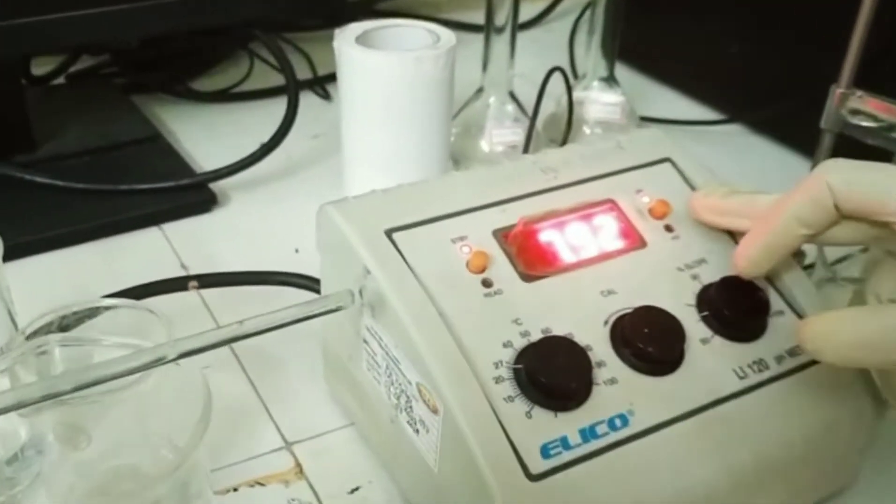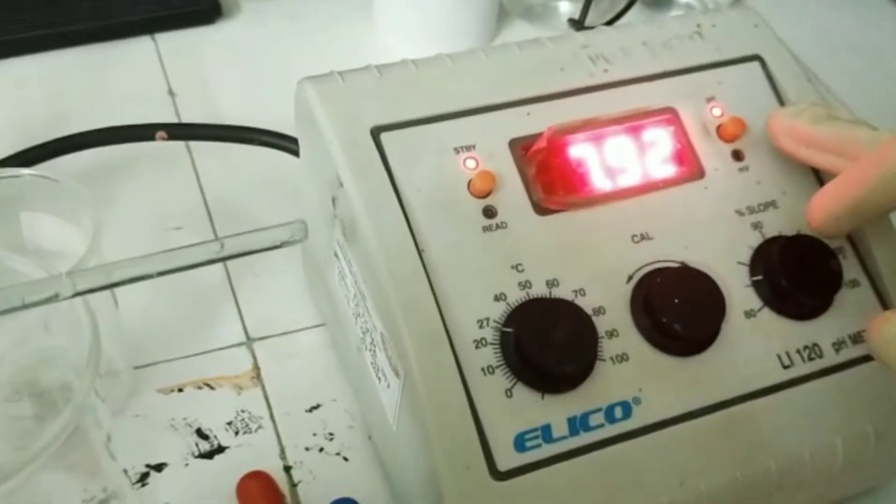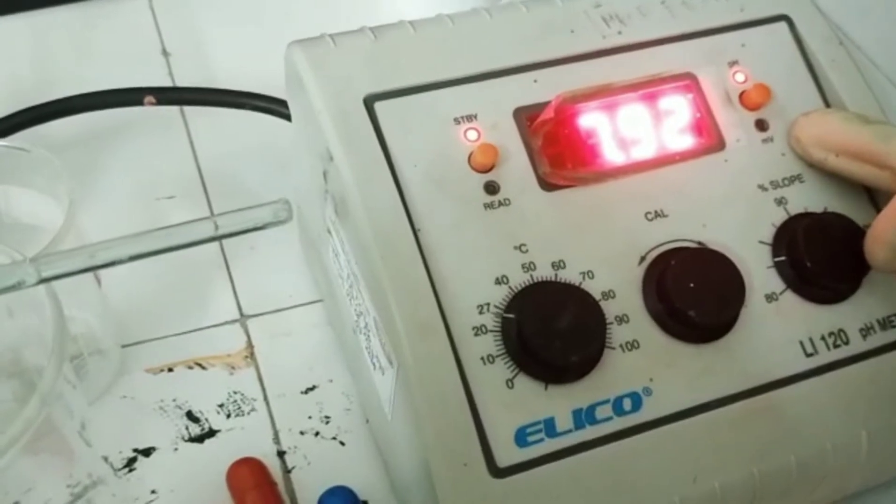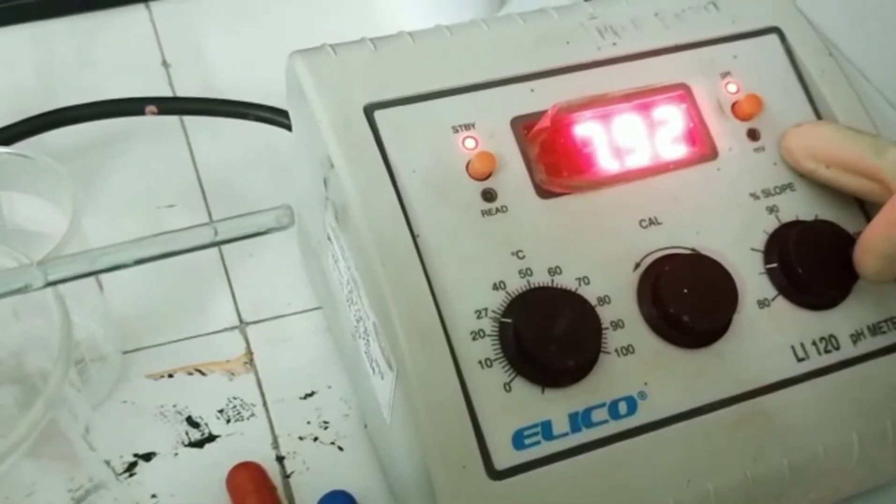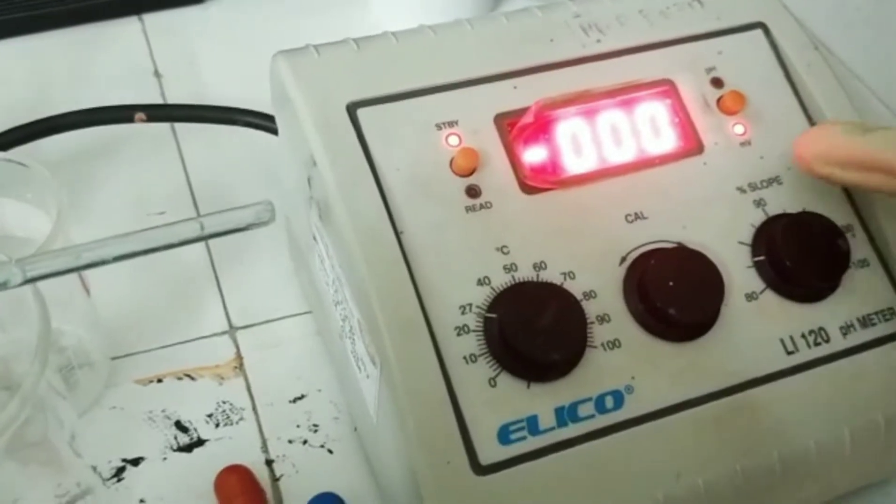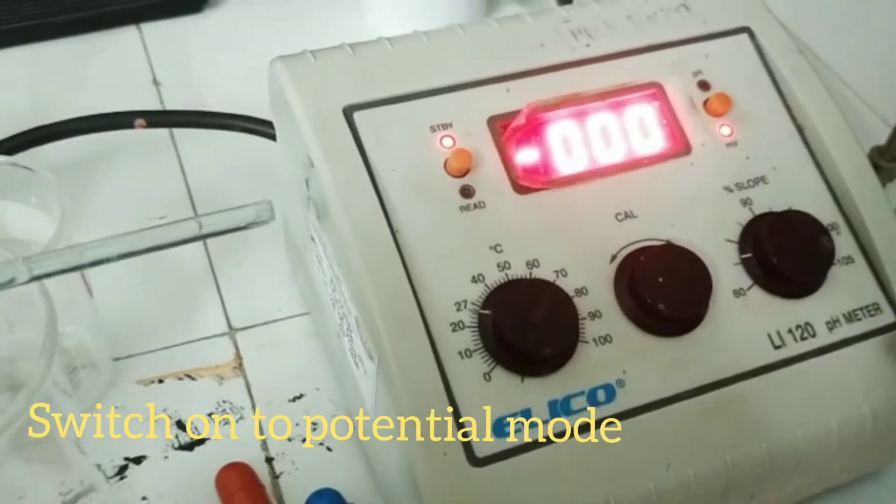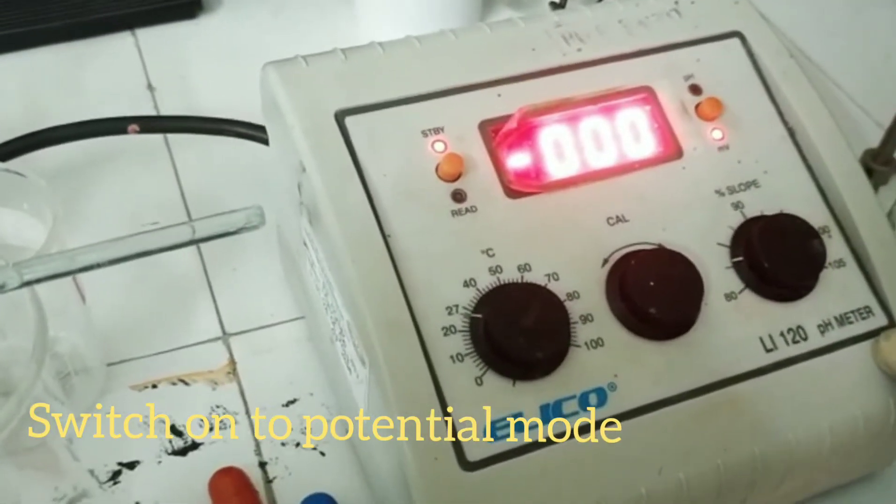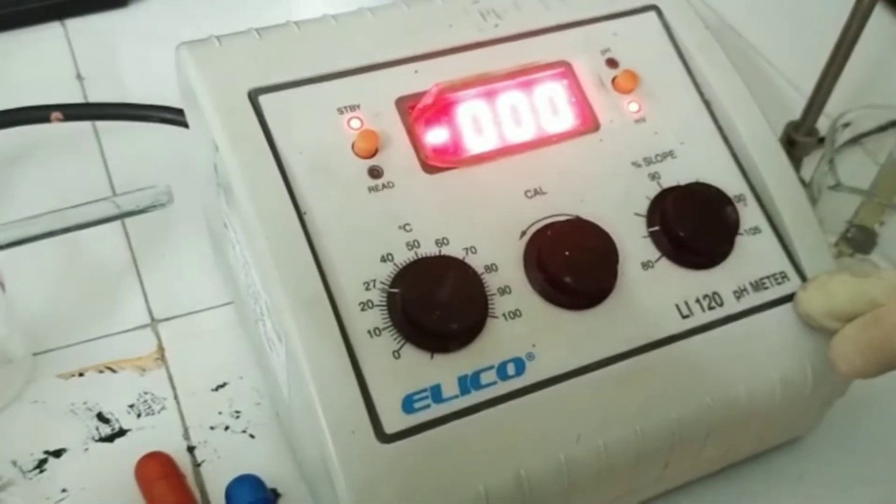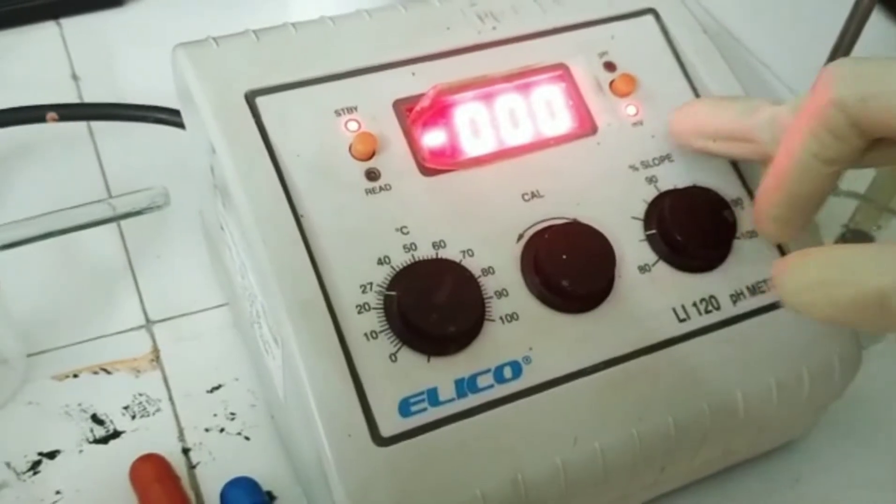In this instrument, we can see two options here. One is the pH mode and the other is the millivolts mode, that is a potential mode. So, today I have switched on to the potential mode because I want to perform a potentiometric titration. Hence, using this instrument, we can even perform potentiometry also simply by moving on to the potential mode.